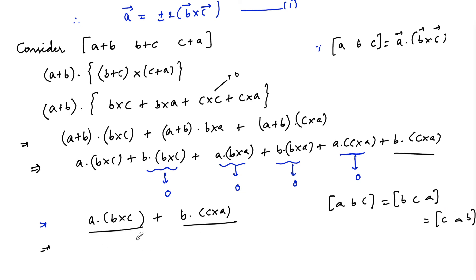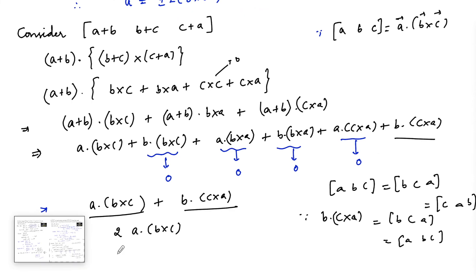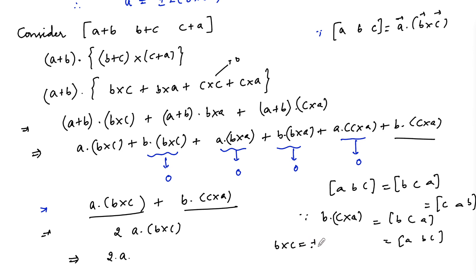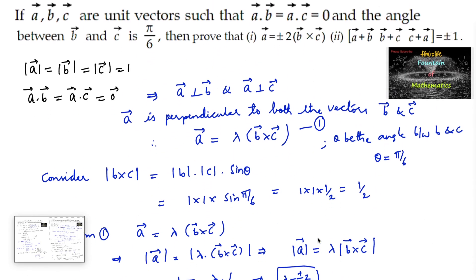Therefore the expression equals 2·a·(b×c). From the first result, b×c = ±(1/2)a, so 2·a·(±(1/2)a) = ±a·a = ±|a|² = ±1, since |a| = 1. Therefore [a+b, b+c, c+a] = ±1, and the second result is proved.